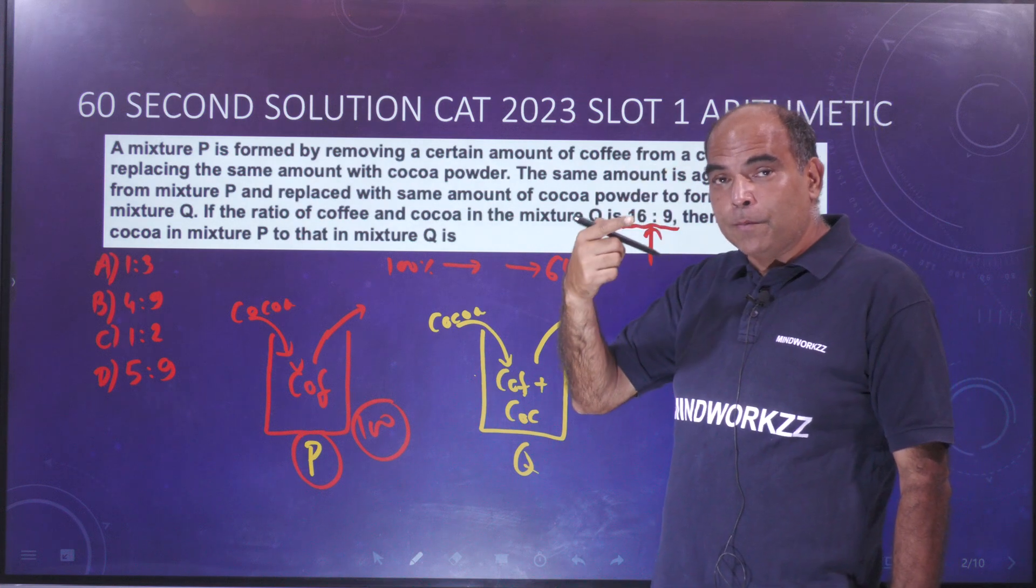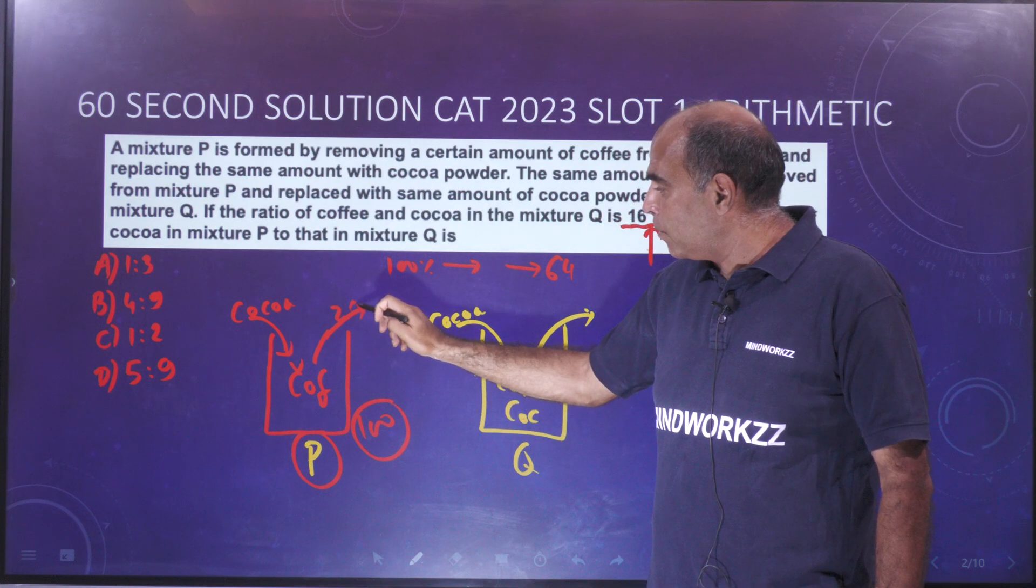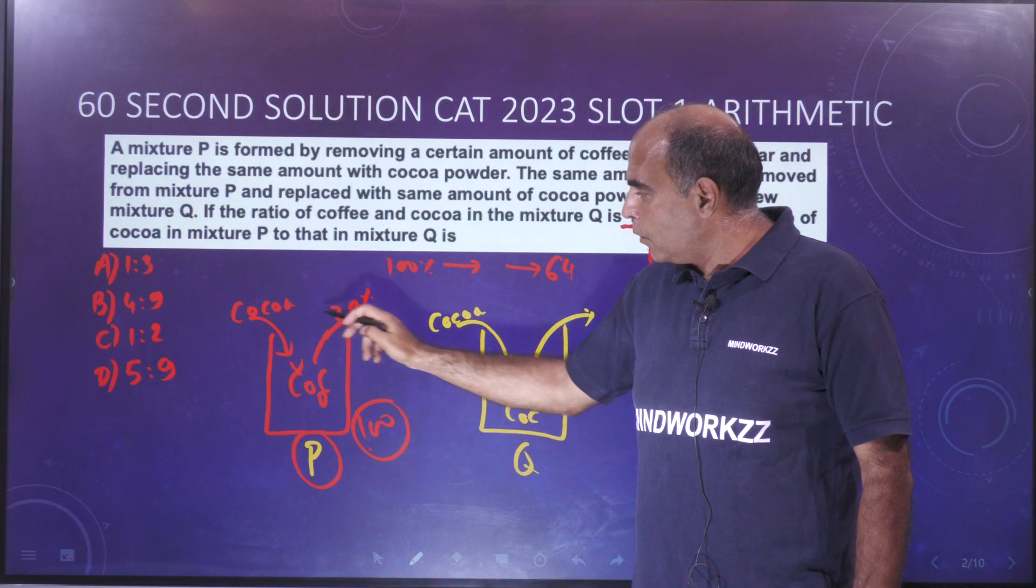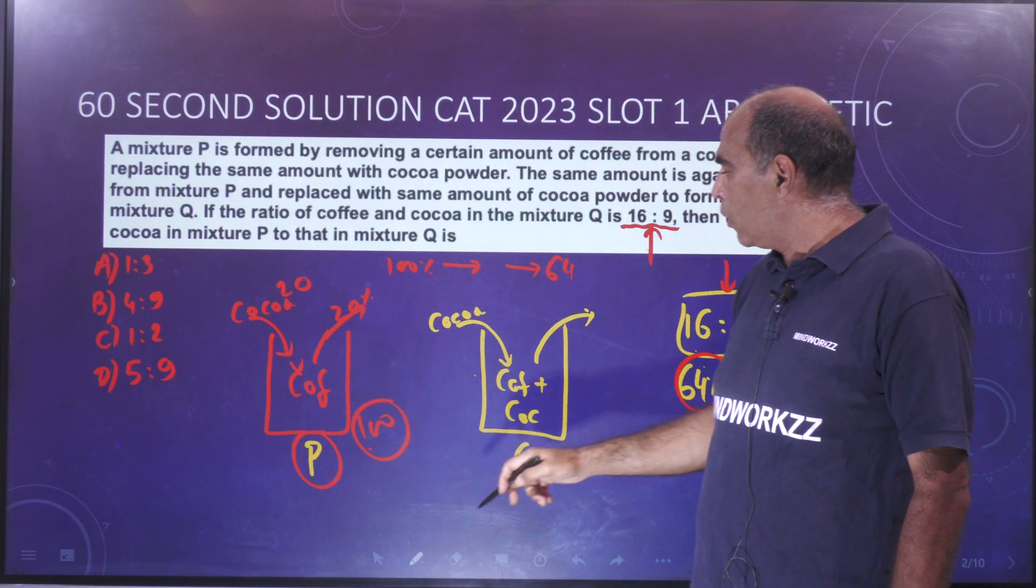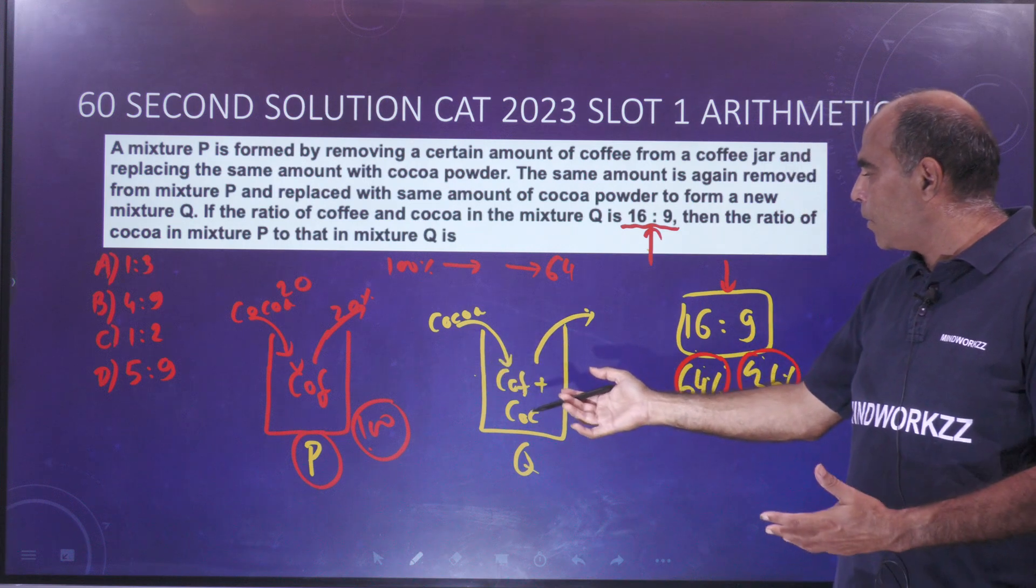This means that you are taking out 20% of the coffee. So out of 100 you're taking 20 coffee, putting back 20 cocoa. And then of course you are doing the same thing - you're taking out 20 but putting back 20 cocoa. This time the mixture comes out.